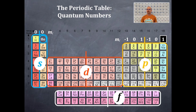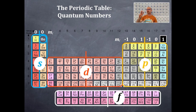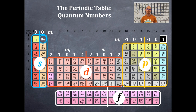Now we'll do the same thing with the D-type orbitals. With P orbitals we had three M sub L values; remember the number of orbital boxes are one, three, five, and seven. So the next number after three is five. We repeat this set of five numbers twice. The M sub L values for the D-type orbitals are negative two, negative one, zero, one, two — then repeating: negative two, negative one, zero, one, two.